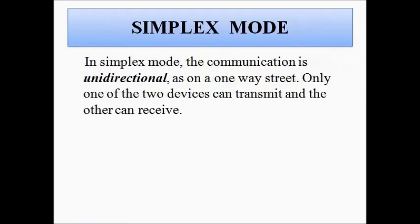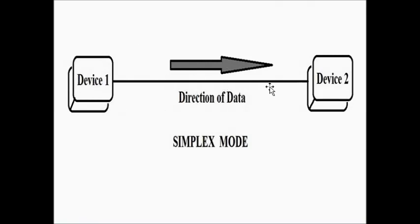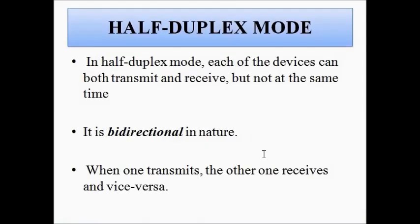In simplex mode, the communication between two devices is unidirectional in nature — one device can only transmit data and the other device can only receive data. For example, device one is the sender and device two is the receiver; device one cannot receive data and device two cannot send data. There is a unidirectional flow of data from device one to device two only.